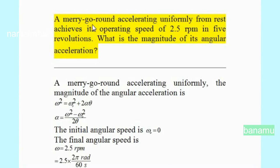A merry-go-round accelerating uniformly from rest achieves its operating speed of 2.5 revolutions per minute in 5 revolutions. What is the magnitude of its angular acceleration?